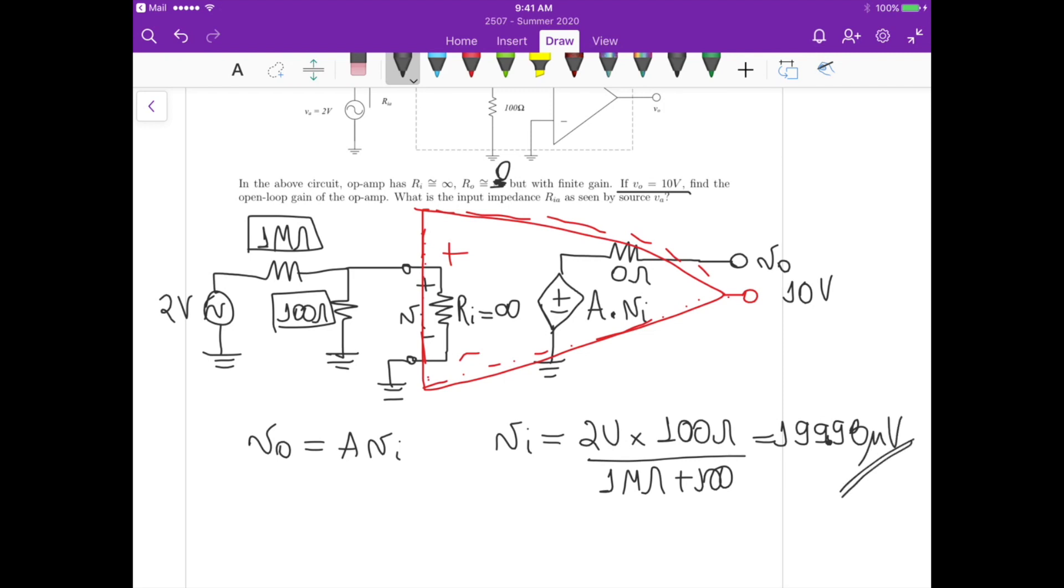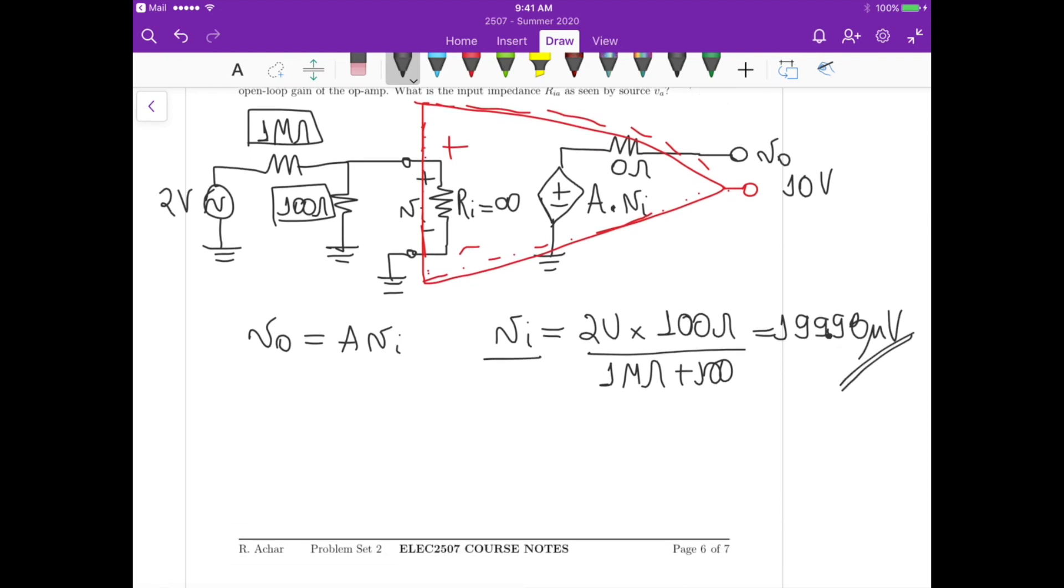Now if we substitute this V_i in this equation for V_out here, we get that the gain is equal to the voltage at the output divided by the voltage at the input. So this is close to 10 volts divided by 199.98 microvolts, and this gives us something that's close to 50,005 volts per volt.